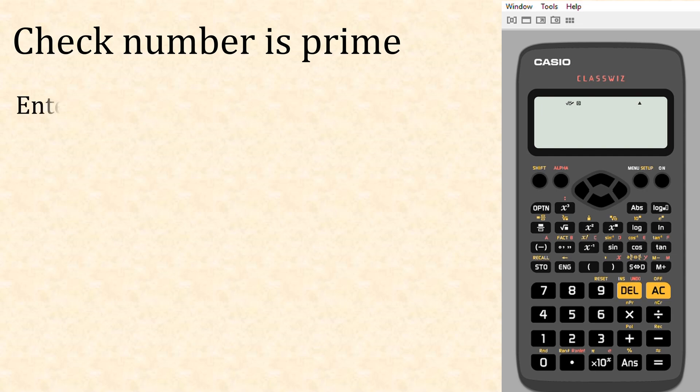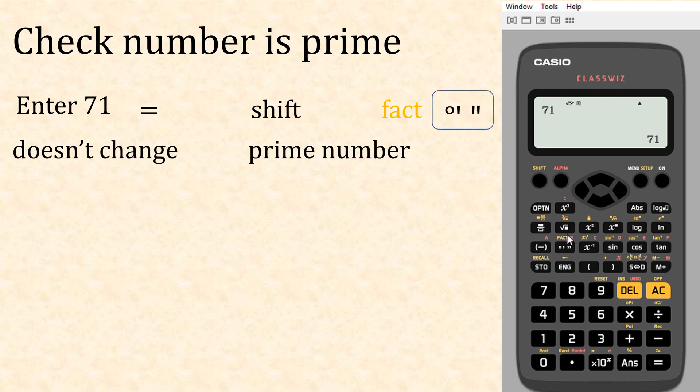So knowing this, we can check to see if a number is prime. For example, say we had the number 71. We would enter 71, equals, shift, and then fact. As you can see, it doesn't change, and that means this is a prime number.